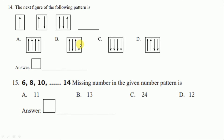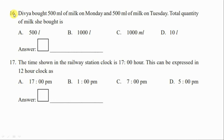The correct option is B — draw the figure. Question number fifteen: the missing number in the pattern 6, 8, 10, _, 14. Six plus two is eight, eight plus two is ten, ten plus two is twelve, twelve plus two is fourteen. So the right option is D, twelve.